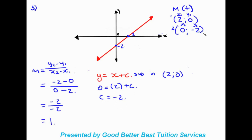C = negative two is our y-intercept — and as you can see, it aligns with the y-intercept point given to us. Our final equation is y = x - 2. To recap: work out the gradient, write the initial equation with the gradient, choose any one of the two given points, solve for c, then substitute into the equation to write the final answer.